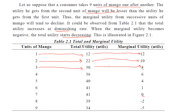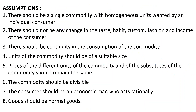You can see from the table that when marginal utility has become negative, total utility is again decreasing. So total utility increases at a diminishing rate, and this is explained by the Law of Diminishing Marginal Utility.